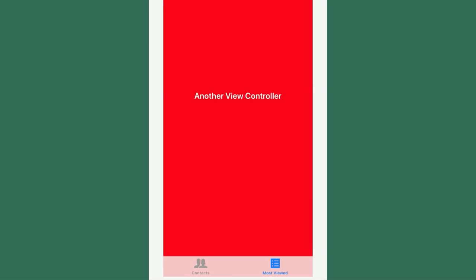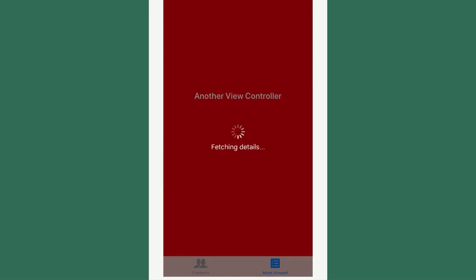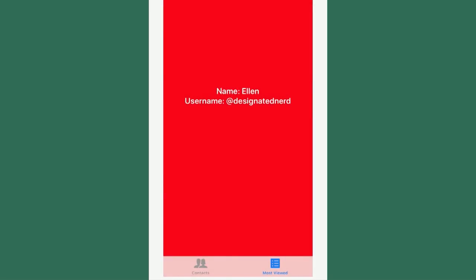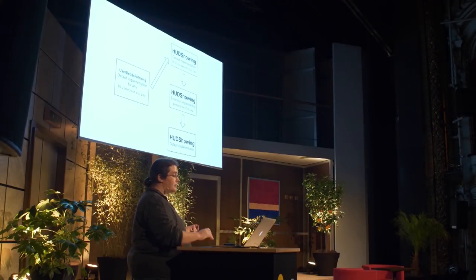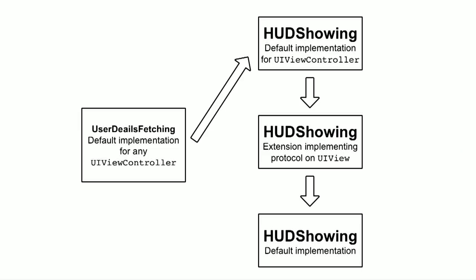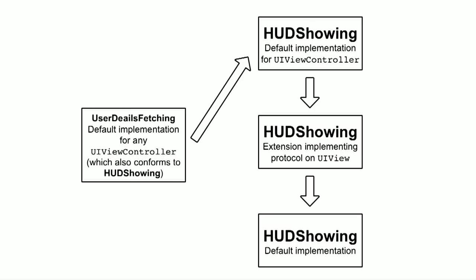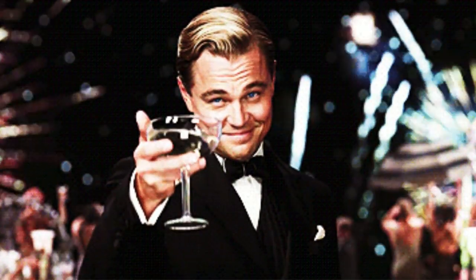Finally, I had my nice pretty HUD right where I wanted it, and this was now completely reusable across view controllers. To review: we have UserDetailsFetching, a default implementation for UIViewControllers — but only UIViewControllers which conform to HUDShowing — calling into the conditional default implementation of HUDShowing for UIViewControllers, calling into an extension on UIView, calling into the default implementation of HUDShowing. And that is enough layers to make Leo a very happy man.